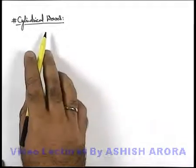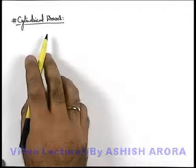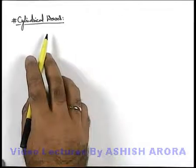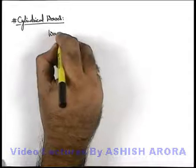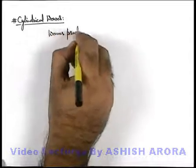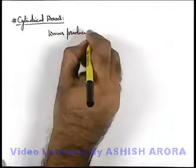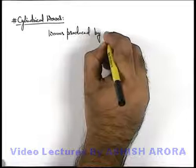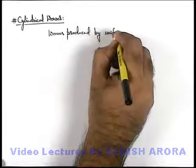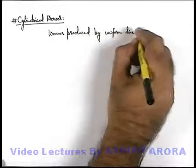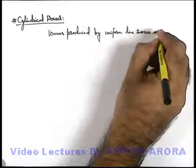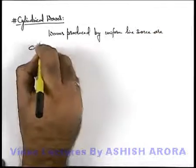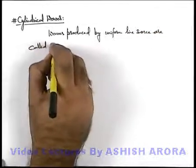Now we'll discuss cylindrical waves. Just like in the previous section where we studied spherical waves, here we can write that waves produced by a uniform line source are called cylindrical waves.